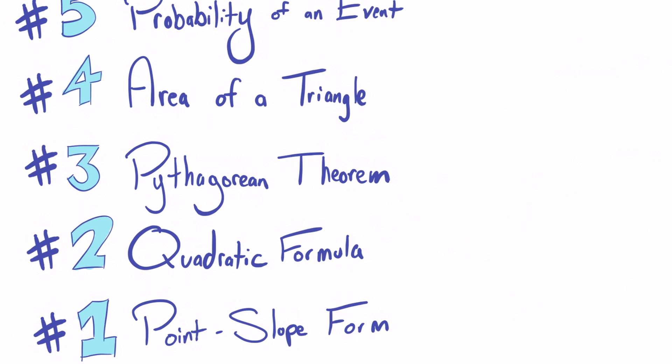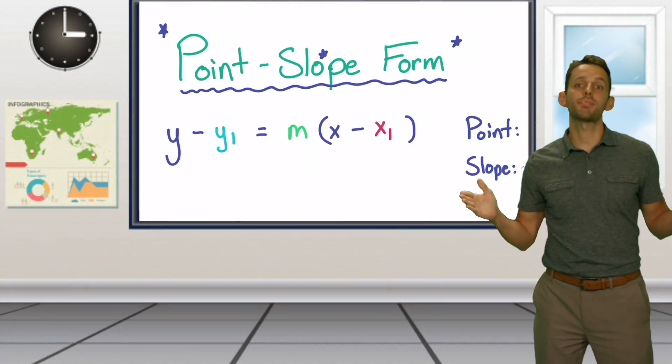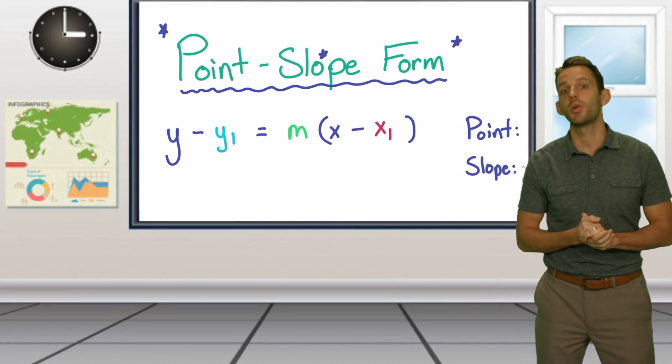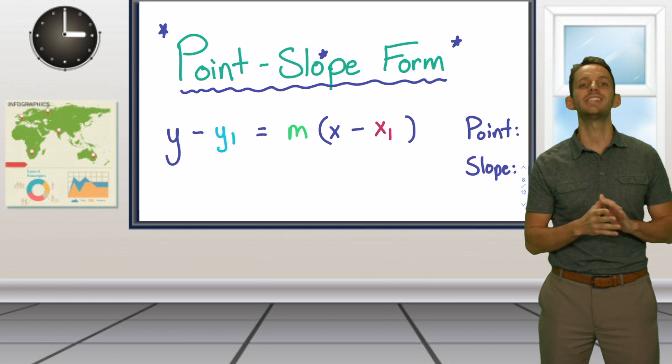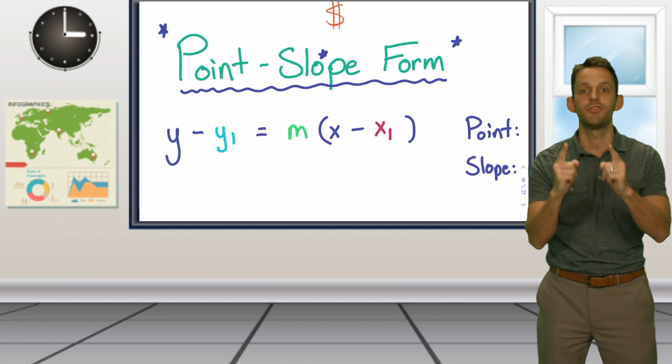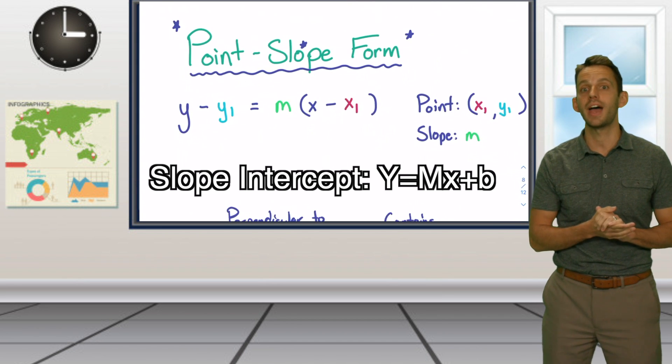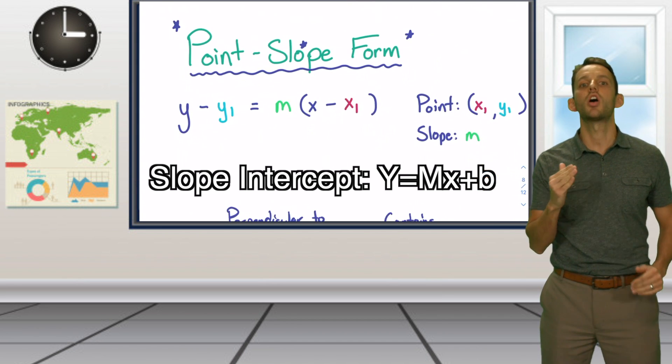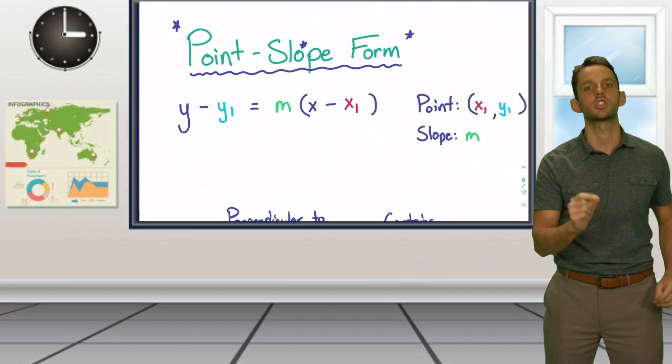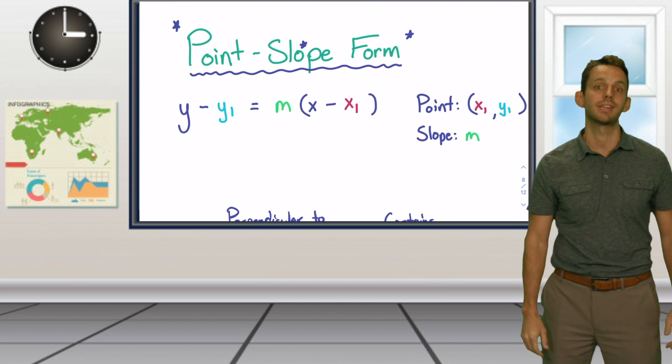And number one, point-slope form. Perhaps a surprise for many people for our number one spot, point-slope form needs to become your money-making formula. Most students are traditionally taught slope-intercept form, that is, y equals mx plus b, but I would argue that point-slope form is far superior once you understand the basics.